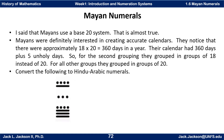The Mayans use a base twenty — that's almost true. They grouped in twenties on every digit except for one. Mayans were definitely interested in creating accurate calendars and noticed there are approximately eighteen groups of twenty in a year — three hundred sixty days. Their calendar had three hundred sixty days plus five unholy days, making it a pretty accurate calendar. So for the second grouping they grouped in groups of eighteen instead of twenty, and for all other groups they grouped in twenty.